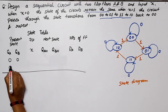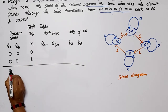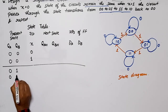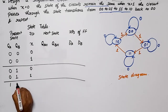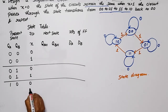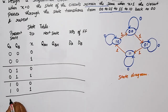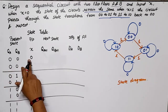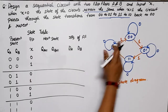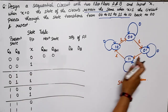Now let's fill in the state table. For each of the four states, there are two conditions (X=0 and X=1). For present state 00: if X=0, next state is 00; if X=1, next state is 01. For present state 01: if X=0, next state is 01; if X=1, next state is 11. For present state 10: if X=0, next state is 10; if X=1, next state is 00. For present state 11: if X=0, next state is 11; if X=1, next state is 10.